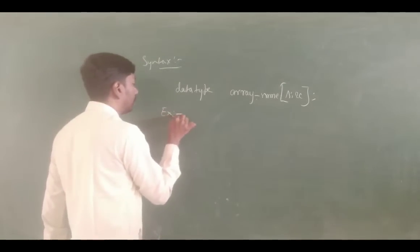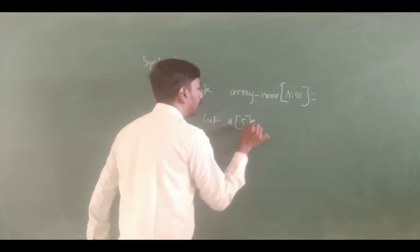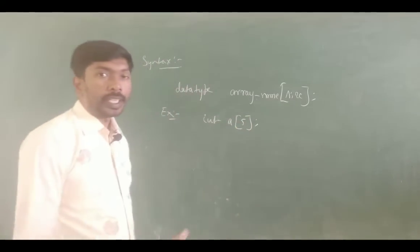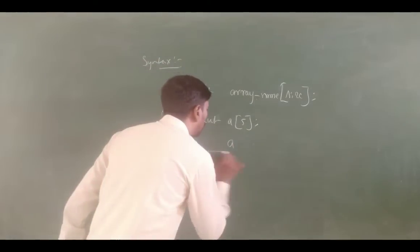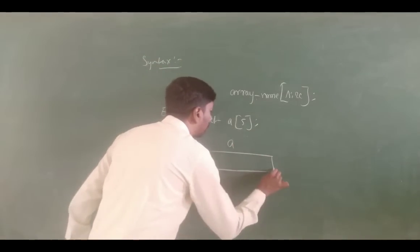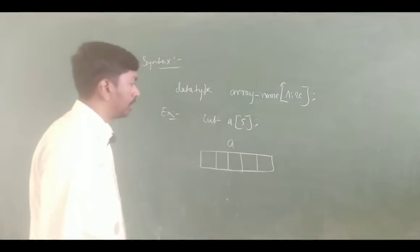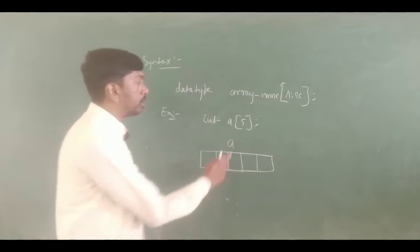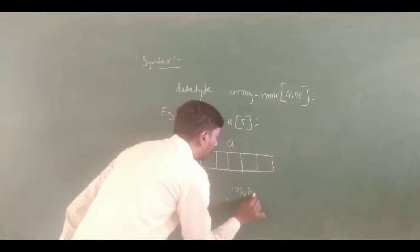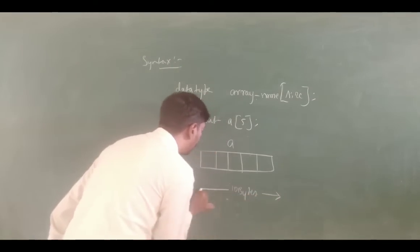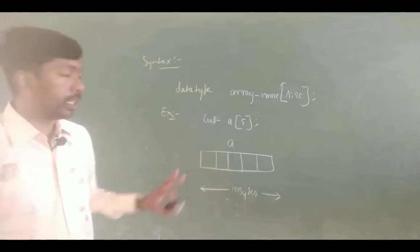For example, integer a of 5 — integer is 2 bytes, so with 5 blocks allocated, that is 5 memory blocks allocation. Total is 5 into 2 bytes, so total 10 bytes allocation. This will be allocated as 10 bytes — so memory block with 10 bytes allocation.